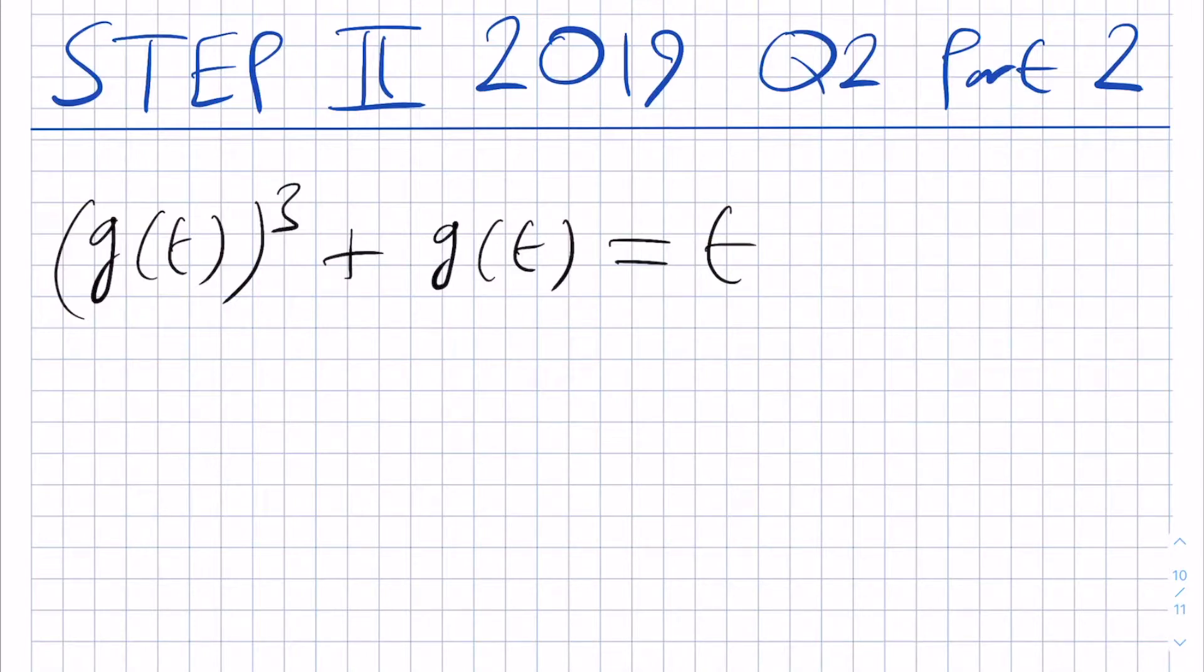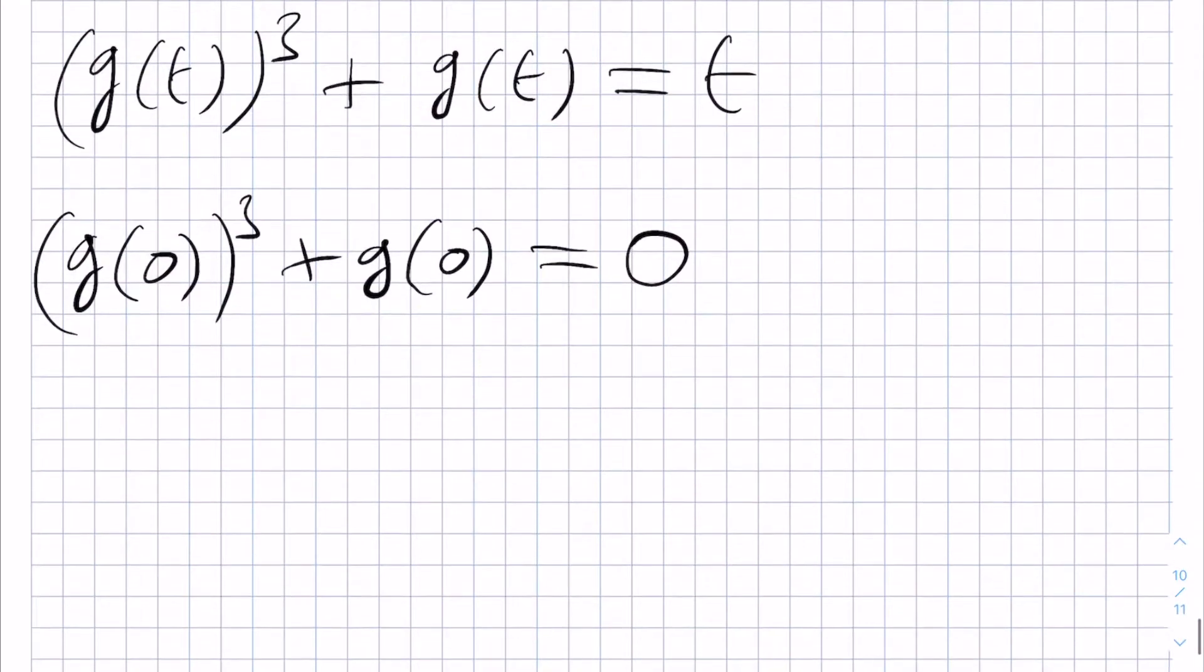We're asked to prove that g(0) is equal to 0. So let's put in 0 for t and see what we get. We would have g(0) cubed plus g(0) is equal to 0. Hence, we factorize this and get g(0) as a factor, and then g(0) squared plus 1 is equal to 0.